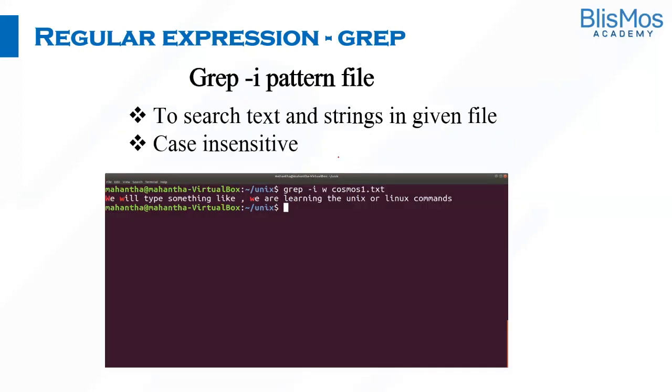In the previous case, capital W was not highlighted because that was case sensitive. Now, if you want to make your grep command case insensitive, all you have to do is use option '-i'. With this, irrespective of which case they are, the patterns will be searched and displayed for you. Awesome, isn't it?